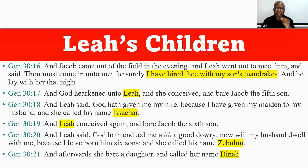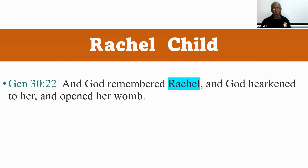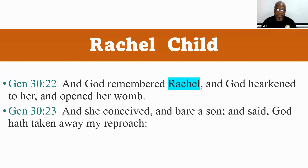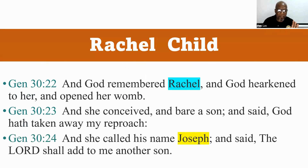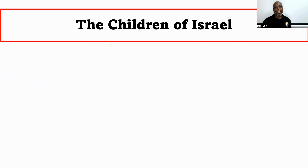So don't forget that Dinah's mother is Leah. After the sixth son, Dinah would have been the seventh child for Leah. And God remembered Rachel, and God harkened to her and opened her womb. And she conceived and bore a son and said, 'God hath taken away my reproach,' because she felt badly. And she called his name Joseph and said, 'The Lord shall add to me another son.' These are the children of Israel — that's the story of how they all came about.